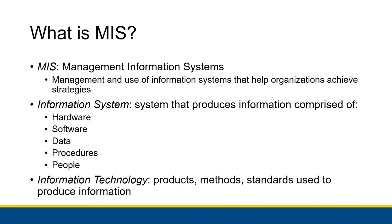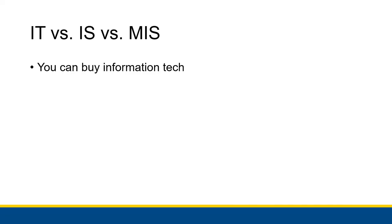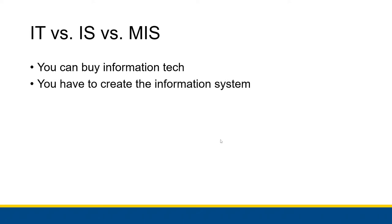Information systems sound pretty similar to another term you might have heard: information technology. Information technology is specifically the products, methods, and standards used to produce information — the hardware you're buying, the services you're renting or creating, and the rules you make for how those services are used within your company. The biggest difference is that you can buy information technology, but you have to create the information system from that information technology.